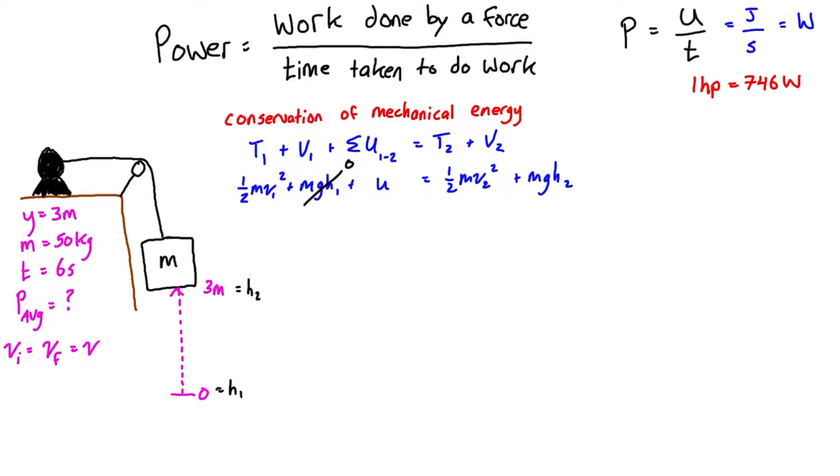We can subtract one half mv squared from both sides and those terms are going to drop out as well. This leaves us simply with the work done from state one to two is equal to mgh2. If we plug in the values, it's 50 kilograms times 9.81 meters per second squared times h2 which is 3 meters.